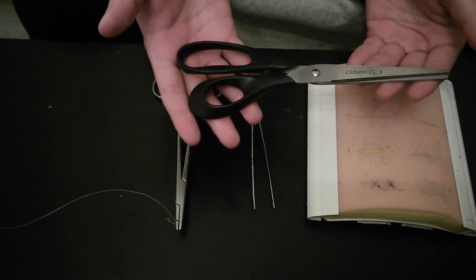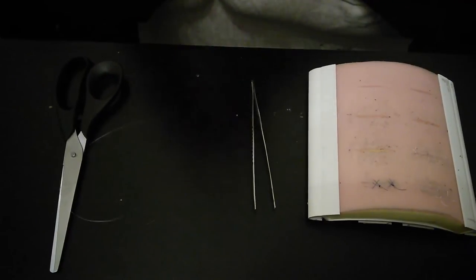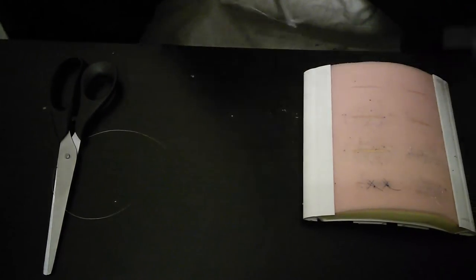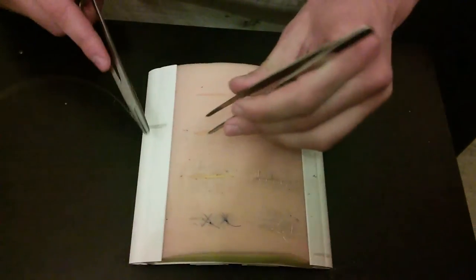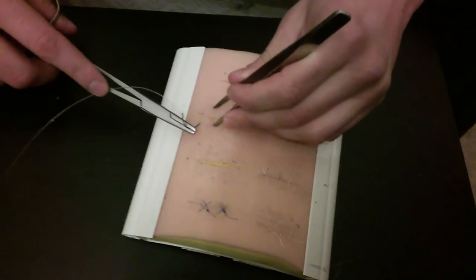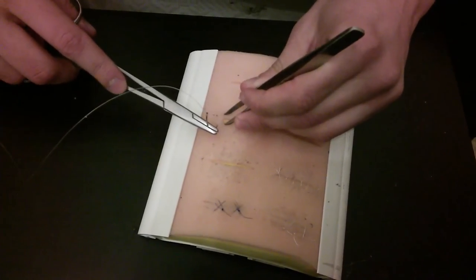Unfortunately we don't have the correct kind of scissors available today. So we are going to do a continuous one for the sake of this tutorial. We are going to start about 5mm away from the wound.